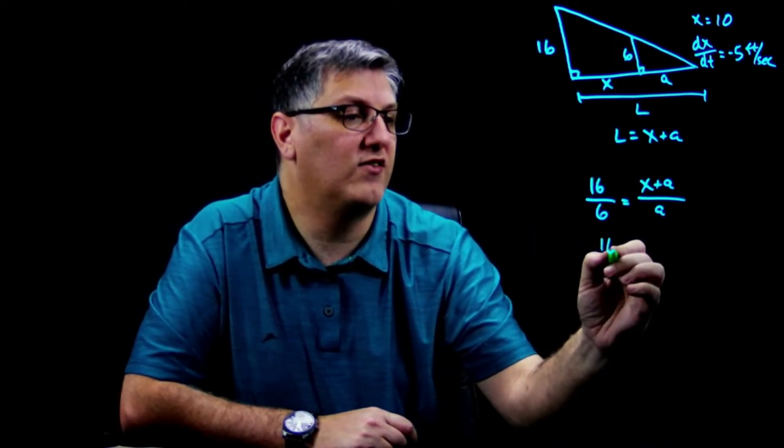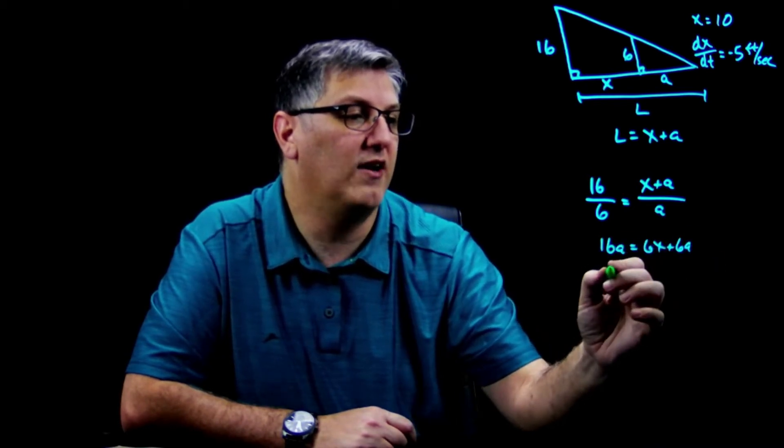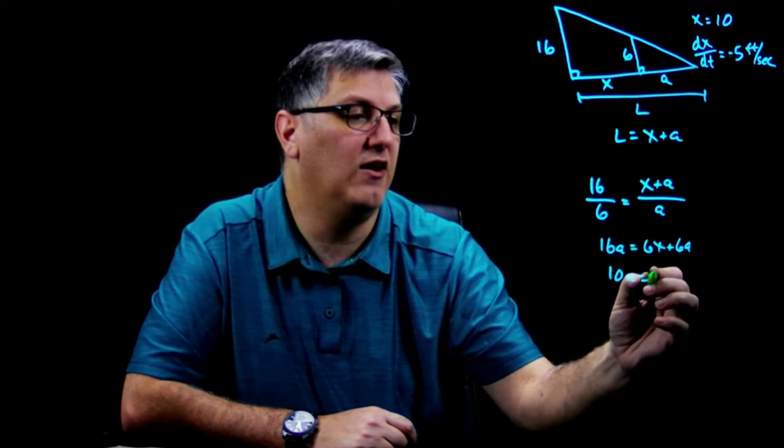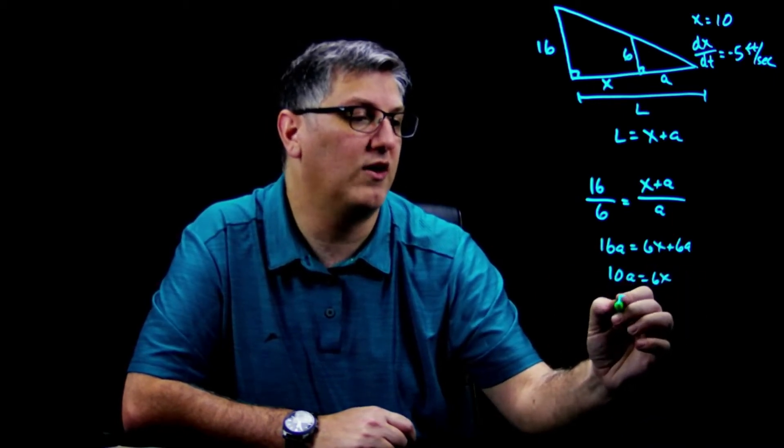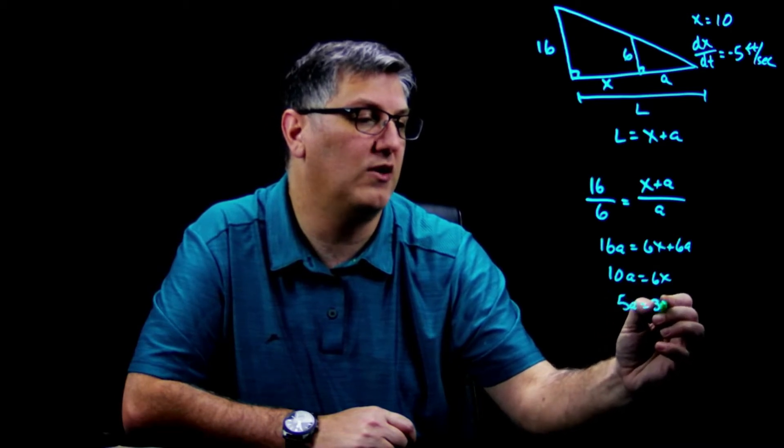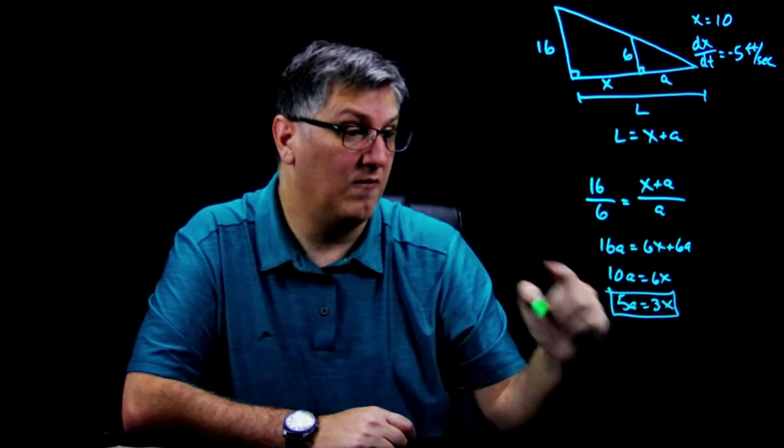All right, from here let's kind of simplify this down. I've got 16 over 6, so cross multiply: 16a equals 6 times x plus a, so 16a equals 6x plus 6a. Subtract 6a from both sides, I have 10a equals 6x. I can scale this down by 2, I'm going to get 5a equals 3x.